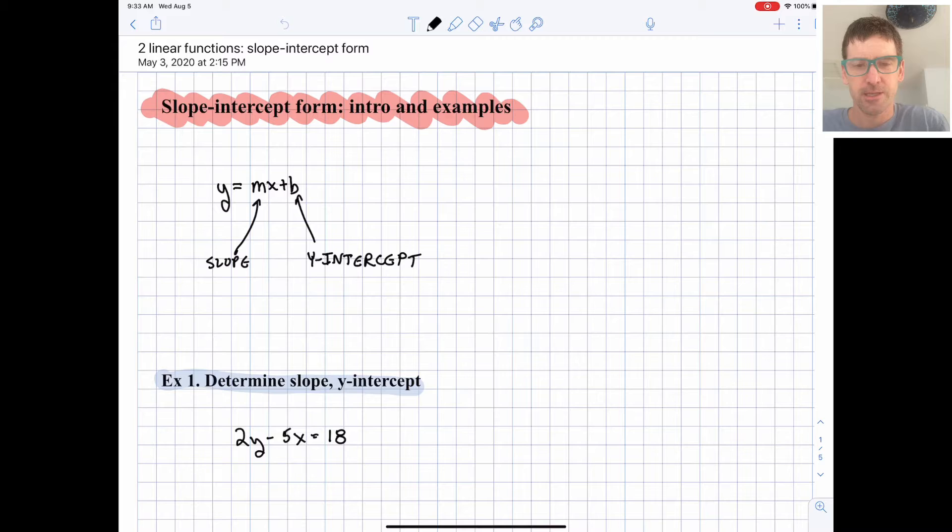So slope intercept form is that familiar form to you I hope, y equals mx plus b. It's probably the most well used form of linear functions and m and b are the coefficients or the numbers in the equation. M represents the slope and b represents the y-intercept. So the y-intercept is where the line crosses the y-axis and the slope is the rise over the run or essentially the steepness of the line.